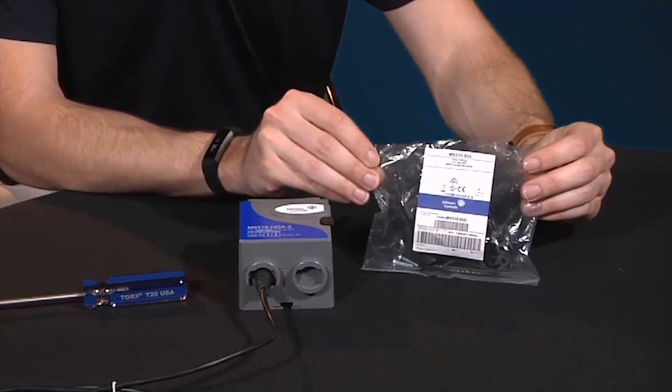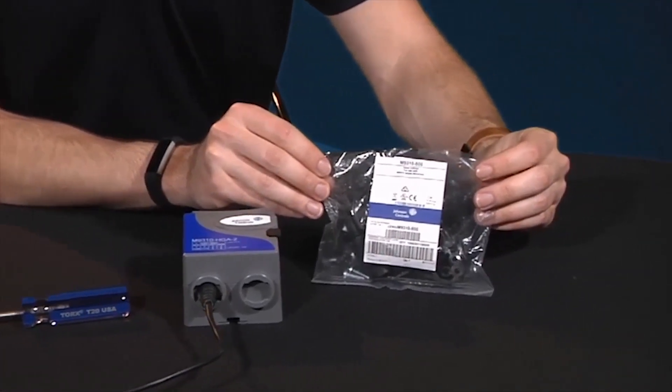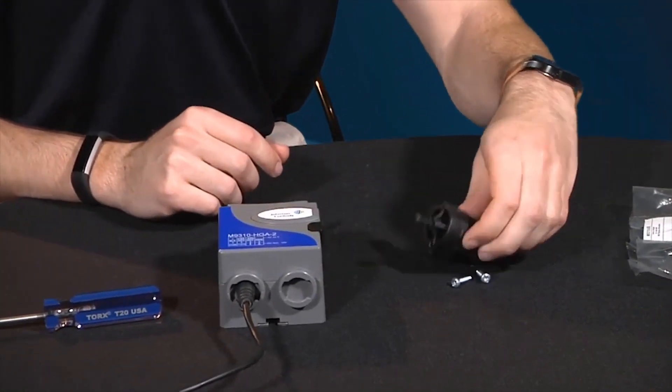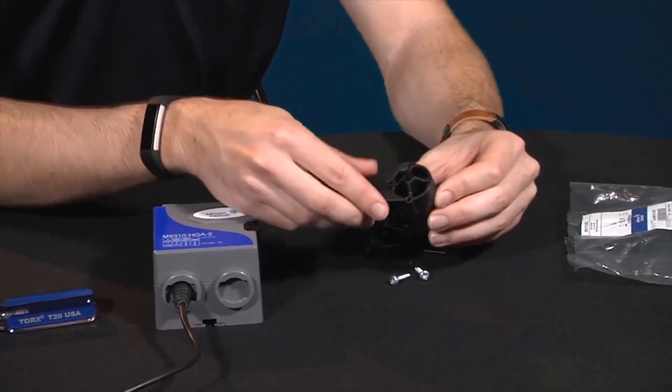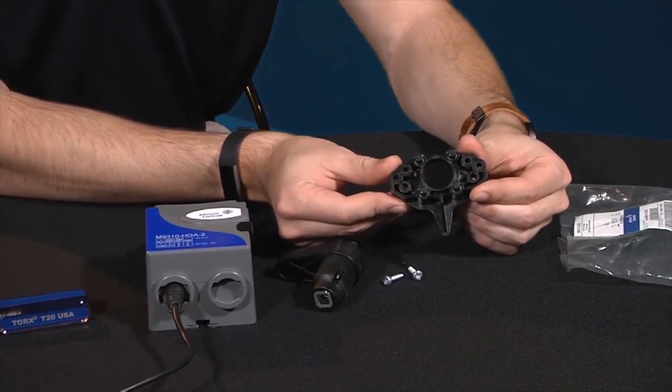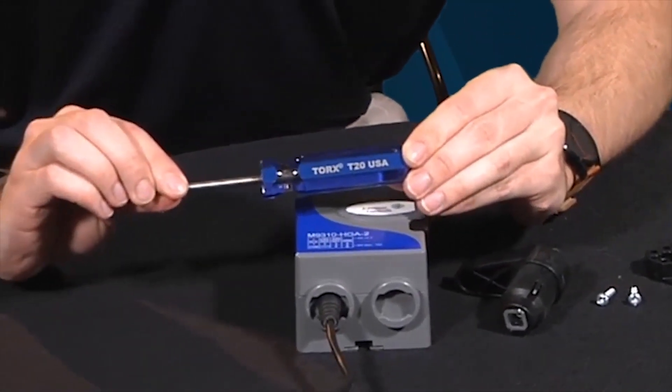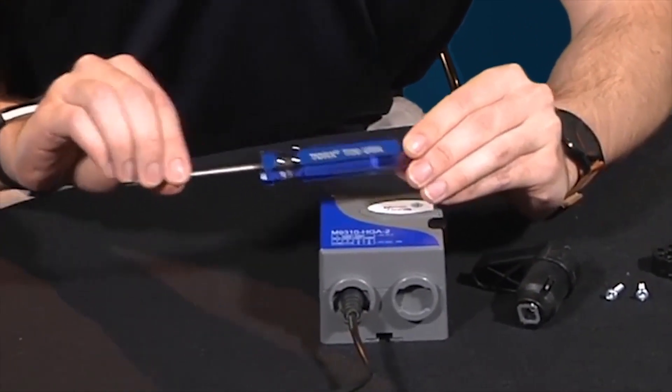We'll be utilizing the M9310-500 conversion kit, which contains one pointer lever, one linkage, and two mounting screws. Tools required will be just a T20 Torx driver.